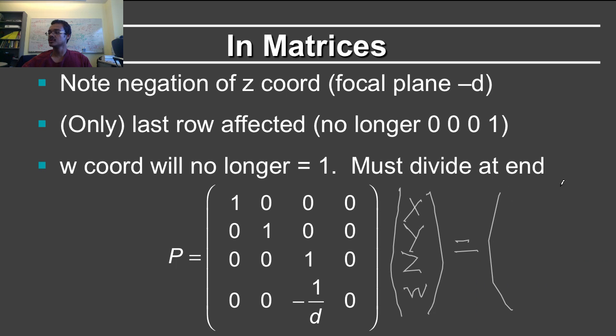This will be equal to, so the x coordinate doesn't change, and so we can just write this as x, we can just write this as y, and initially let's say w is equal to 1. Okay, so what happens to z? It doesn't change either.